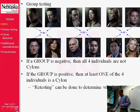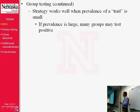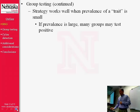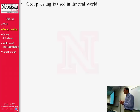Group testing works well when the prevalence of a trait — such as being a Cylon, or in the real world having a disease — is small. If prevalence is large, you're in danger of having many groups test positive and having to do a lot of retests. Applied to the correct situations, group testing can result in an immense time savings and save resources because overall fewer tests are done.